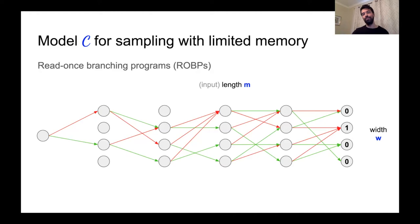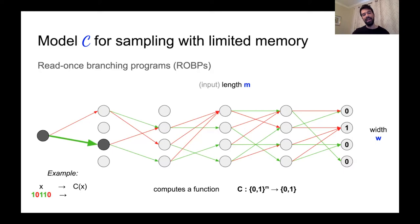This ROBP computes a function in a natural way. Given an input x, it reads it bit by bit and uses these as instructions for which edge to follow at each junction. When it reaches a node in the terminal layer of the ROBP, it outputs the label of that node.